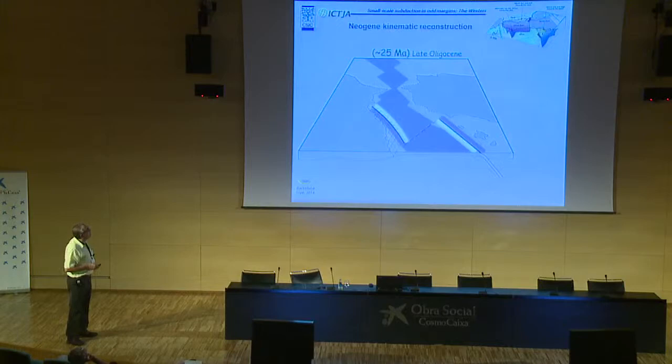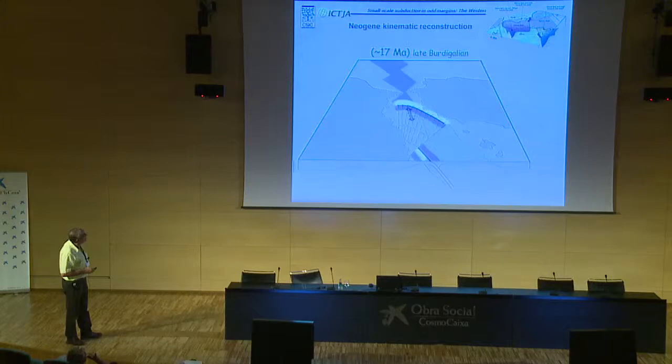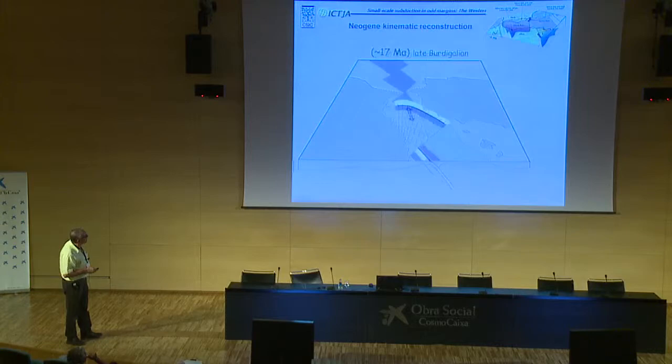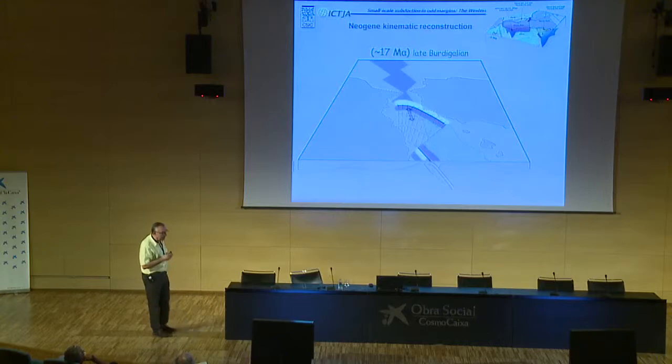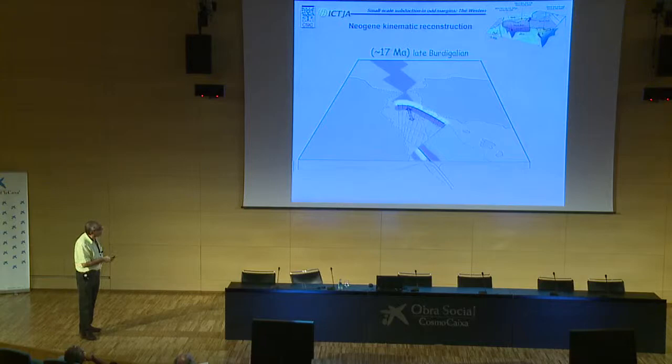A 3D movie shows the evolution from 25 Ma (late Oligocene) through base-Burdigalian, late Burdigalian, Langhian, early Tortonian, to 0 Ma. Notable is the interaction between the two slabs: the east-west subduction and the domain that Cesar called the volcanic arc domain. According to us, it is the interaction between these two subductions which forms this domain.